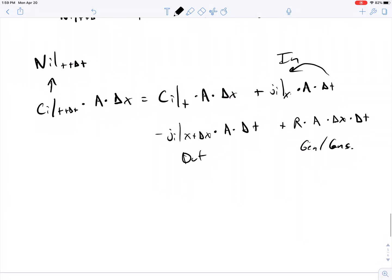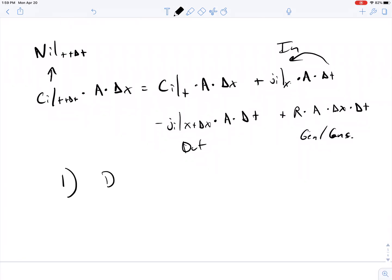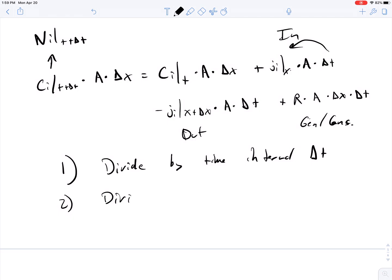So what do we do for this? We're going to do two steps: one, divide by the time interval, which is delta T, and then also divide by the space interval, delta X. Actually it makes sense to divide by A as well just because of how the terms group together, so we're going to include that as well. So we're dividing by that small volume.